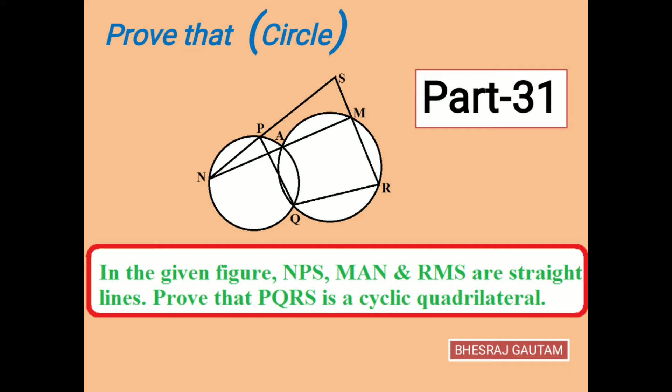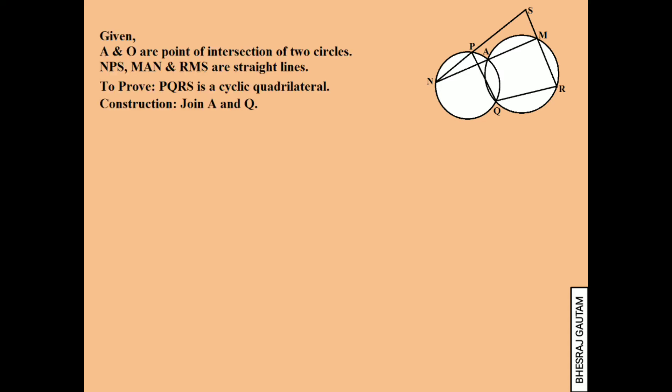To prove PQRS is a cyclic quadrilateral, first of all we copy the figure clearly, write the valuable information, and join the points A and Q as an important constructional part. In this theorem, let's draw the statement-reason table.